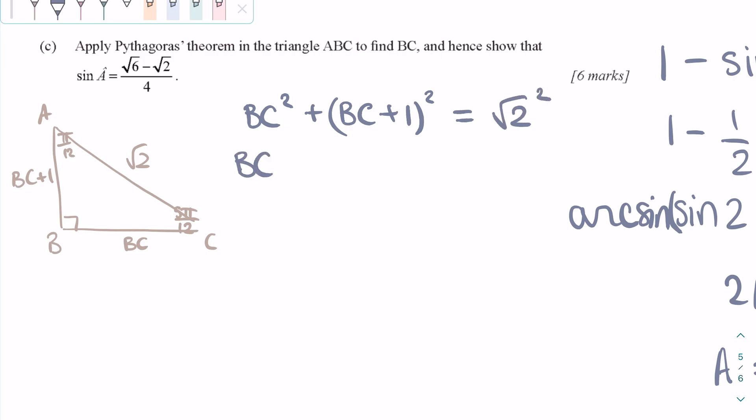We know that the legs of the triangle, so BC and BC plus 1, each of those squared is equal to the hypotenuse, square root of 2, squared. When we simplify this, we get 2BC squared plus 2BC minus 1 is equal to 0.